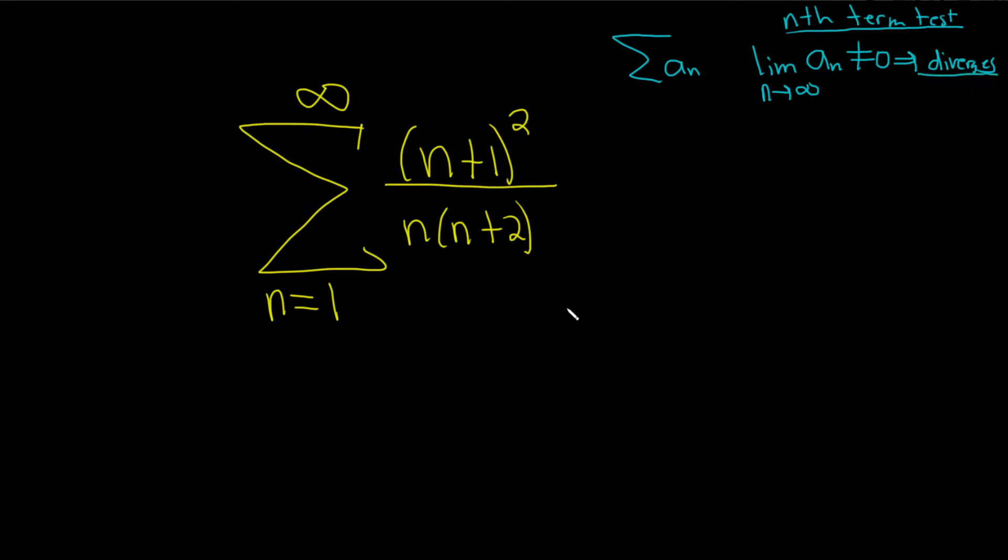So, that's usually a good test to at least mentally try. In this case, it should work. Let's go through it formally. So, let's take the limit as n goes to infinity of this. This is our a sub n for the nth term test. So, we have (n+1)² over n(n+2).